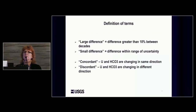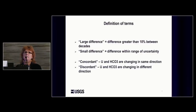In terms of definitions: a large difference means the difference is greater than that 10 percent measurement error threshold. A small difference means the change is within the range of uncertainty. I also use the term concordant wells — those are wells where uranium and bicarbonate are changing in the same direction, consistent with the process Juergens described. Discordant wells are where uranium and bicarbonate are going in opposite directions, suggesting some other process.